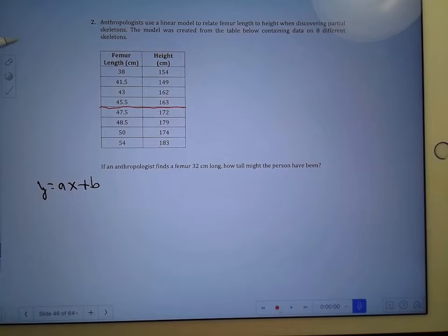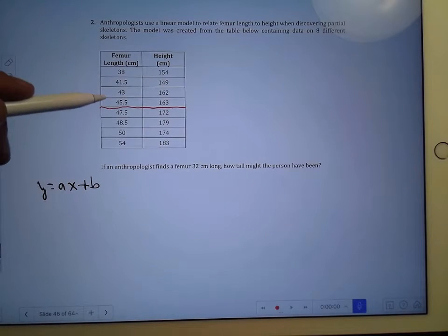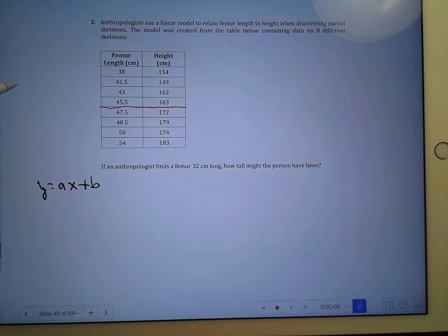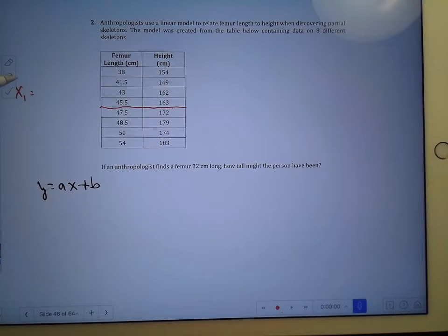And we're going to use the top 4 to calculate an average x for those. We don't know which one of these is the best case example of a point in that distribution, so we'll take the average of them. So x1 will be the average of those x's. When you take the average of those x's, all you have to do is add them up—38 plus 41.5 plus 43 plus 45.5—and then divide that by 4. When you do that, you're going to get 42.